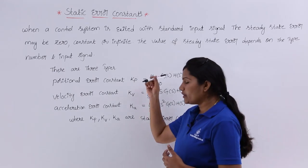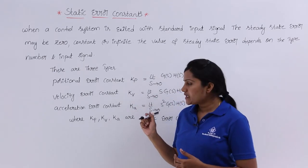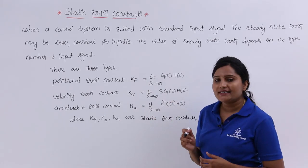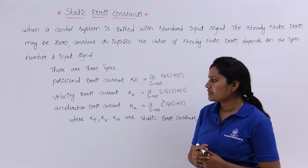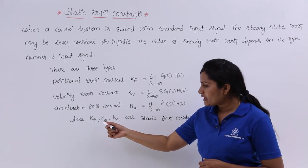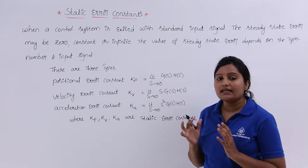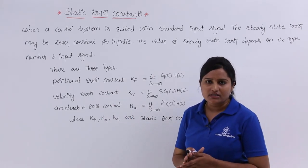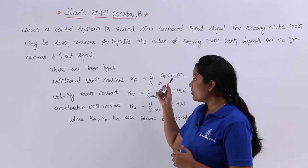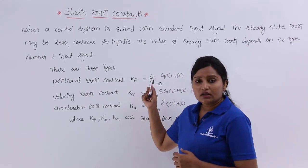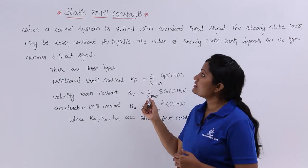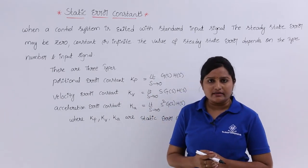In further videos we are going to use these formulas, so please keep in mind the positional error constant Kp, velocity error constant Kv, and acceleration error constant Ka. According to the type number of the system and the input signal, we are going to calculate these static error constants.